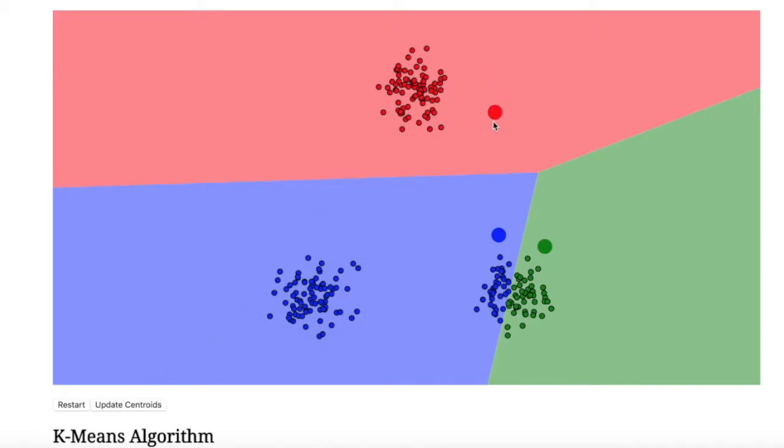So what you'll see is this red centroid here is going to shift towards the center of this red cluster. This blue centroid is going to shift down here towards the center of the blue data points. And this green centroid will shift towards the center of these green data points.